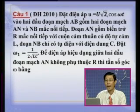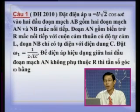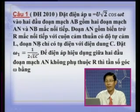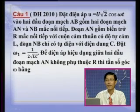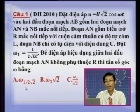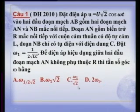Cho điện áp U = U√2·cos(ωt). Đặt điện áp này vào hai đầu đoạn mạch AB, gồm hai đoạn mạch AN và NB mắc nối tiếp. Đoạn mạch AN gồm biến trở R mắc nối tiếp với cuộn cảm thuần có độ tự cảm L. Đoạn mạch NB chỉ có tụ điện với điện dung C. Đặt ω₁ = 1/(2√LC). Để điện áp hiệu dụng giữa hai đầu đoạn mạch AN không phụ thuộc vào giá trị của biến trở R, thì tần số góc ω của dòng điện sẽ bằng bao nhiêu? Chúng ta có bốn đáp án: ω₁/(2√2), ω₁√2, ω₁/√2, hay 2ω₁.